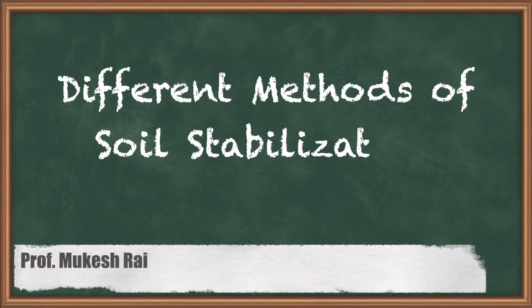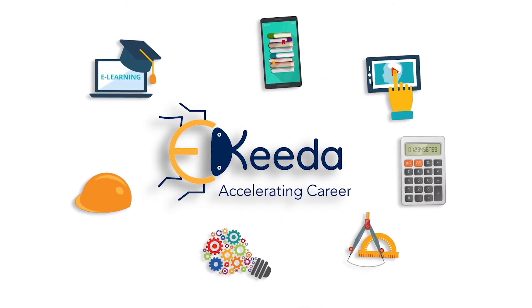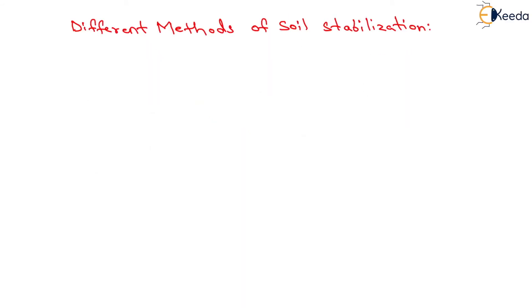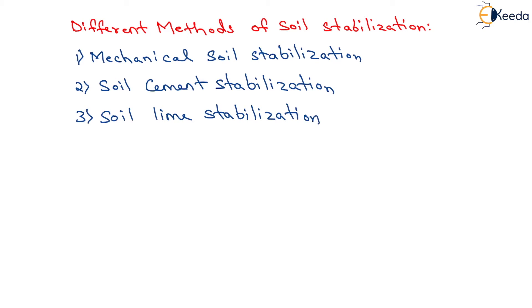Hello students, today we are going to study different methods of soil stabilization. The methods of soil stabilization which are in common use are: first, mechanical soil stabilization; second, soil cement stabilization; third, soil lime stabilization; and last but not the least, soil bitumen stabilization. Now we will discuss each method one by one, starting with mechanical soil stabilization.